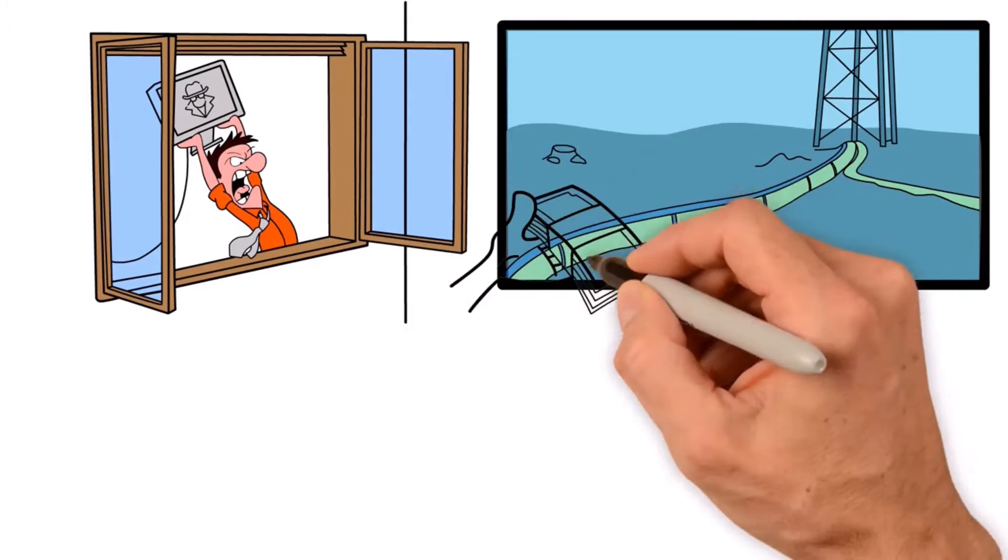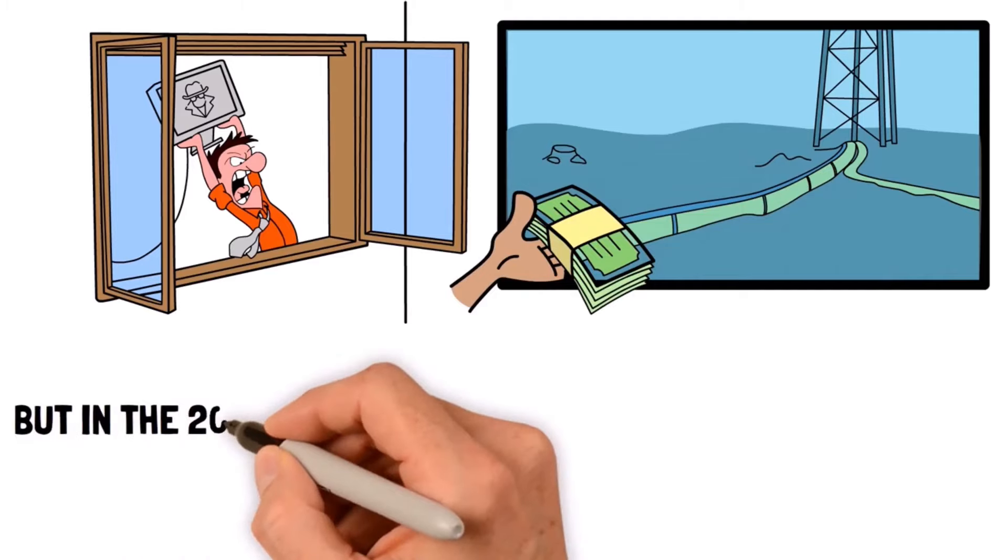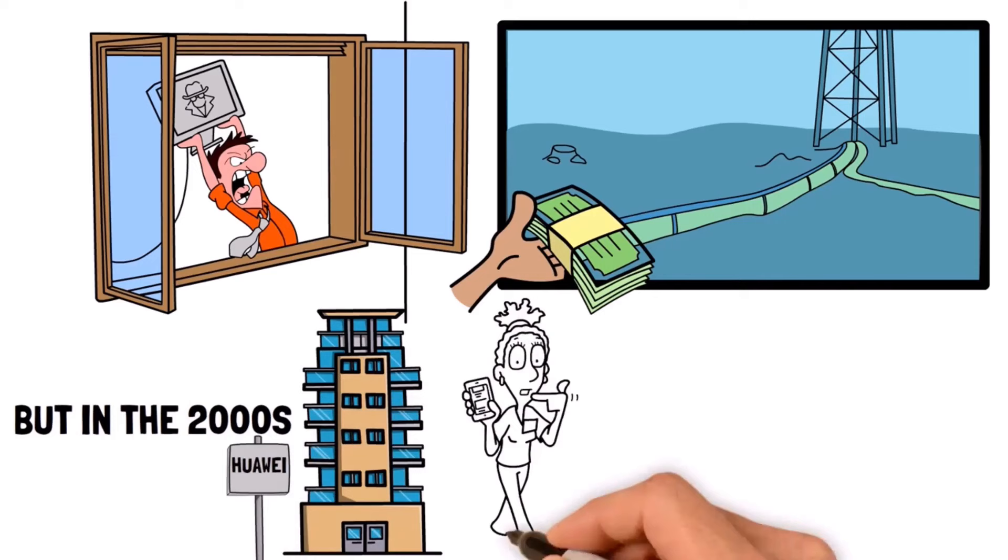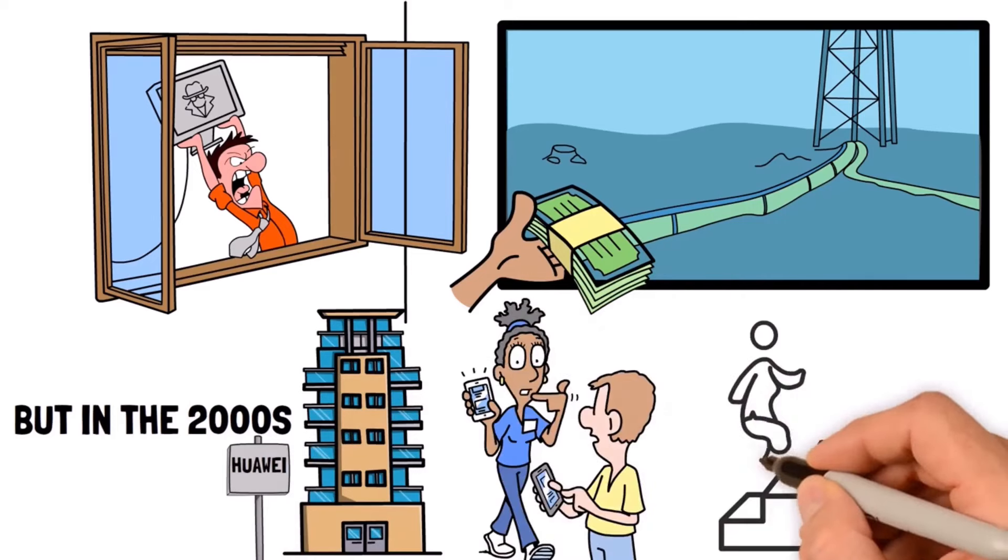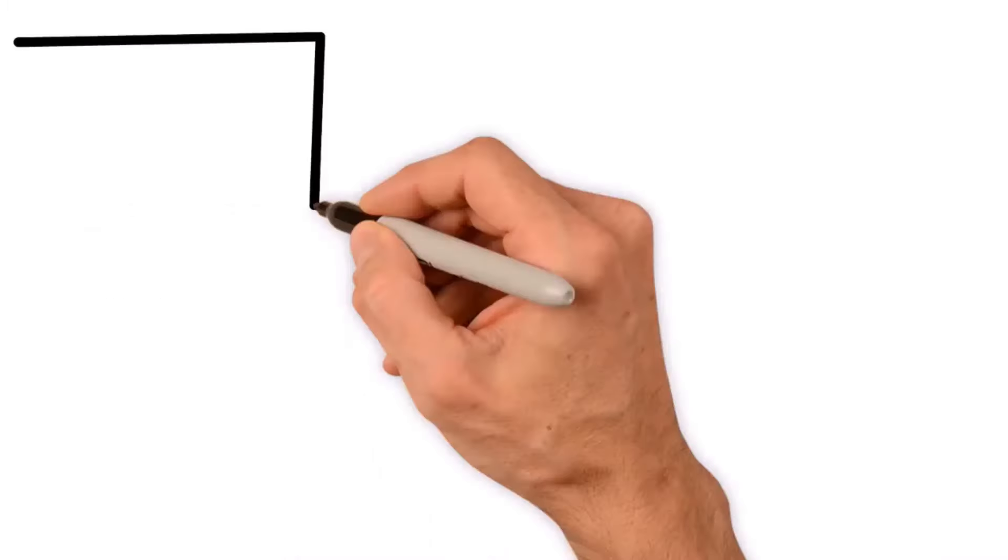Things used to be different. Governments usually paid for these cables. But in the 2000s, Chinese telecom companies like Huawei started going to places that didn't have good internet and helping them out. Then Chinese telecom companies started doing their own thing in the cable business.